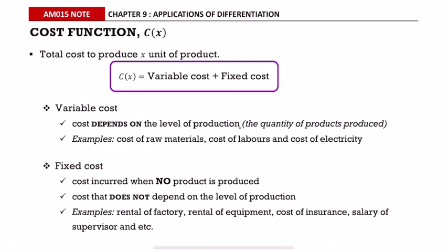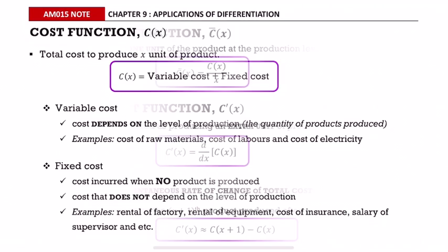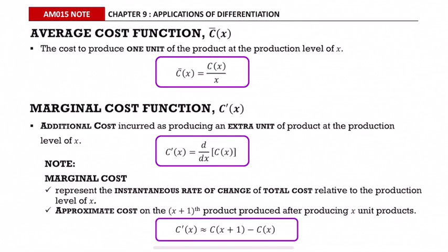Fixed cost is cost incurred when no product is produced. It is also the cost that does not depend on the level of production. For example, rental of factory, rental of equipment, cost of insurance, salary of supervisor, and so on.